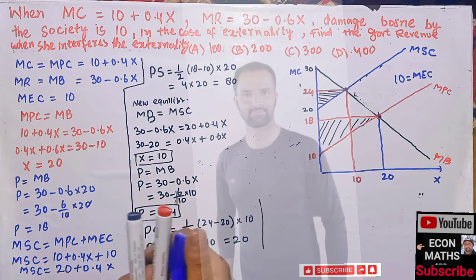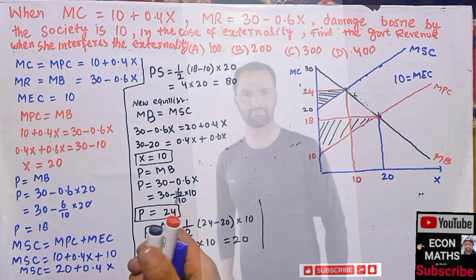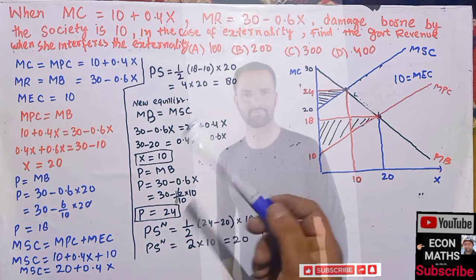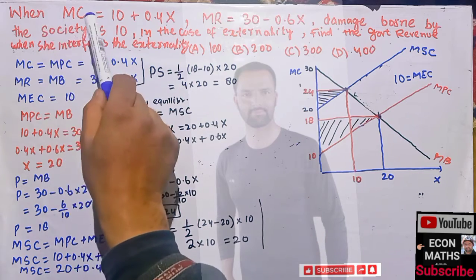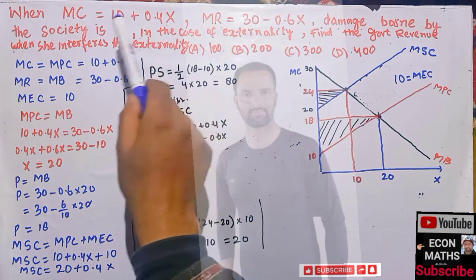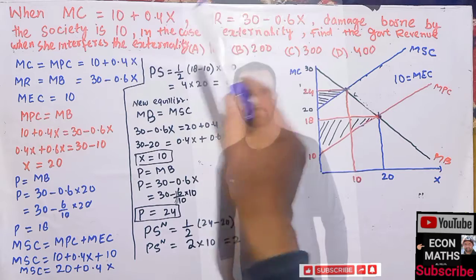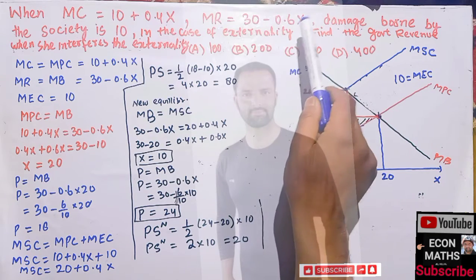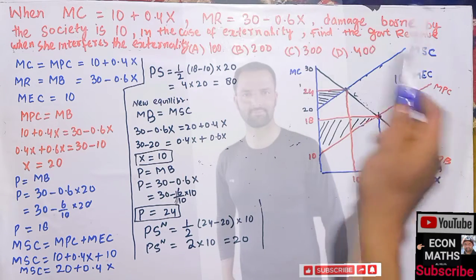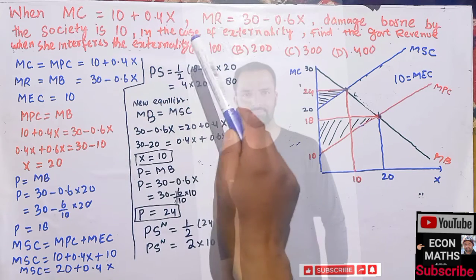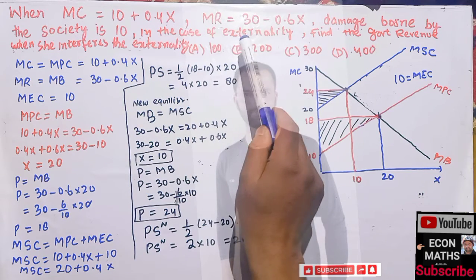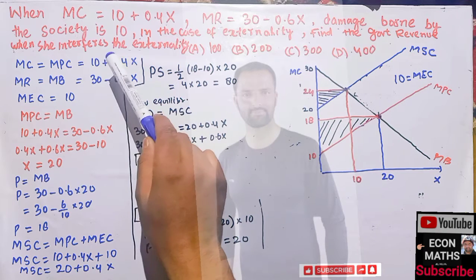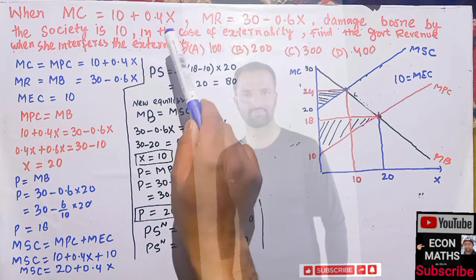Hi, this is Halal. In this video on the mathematical economics series, we will solve another problem on externality. The question is: when marginal cost is 10 plus 0.4x, where x is the quantity, and marginal revenue is given as 30 minus 0.6x, and the damage borne by society is 10 — in the case of externality, find the government revenue when the government interferes with the externality.